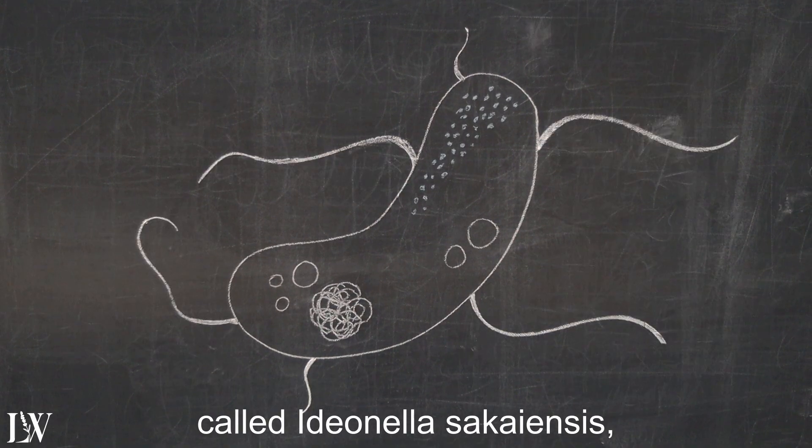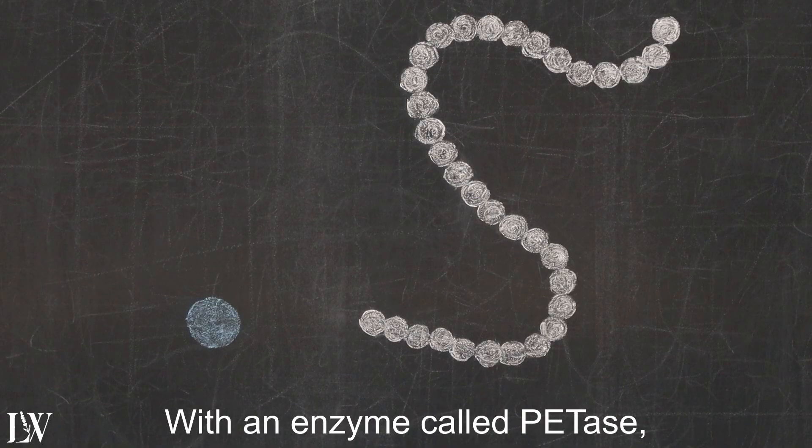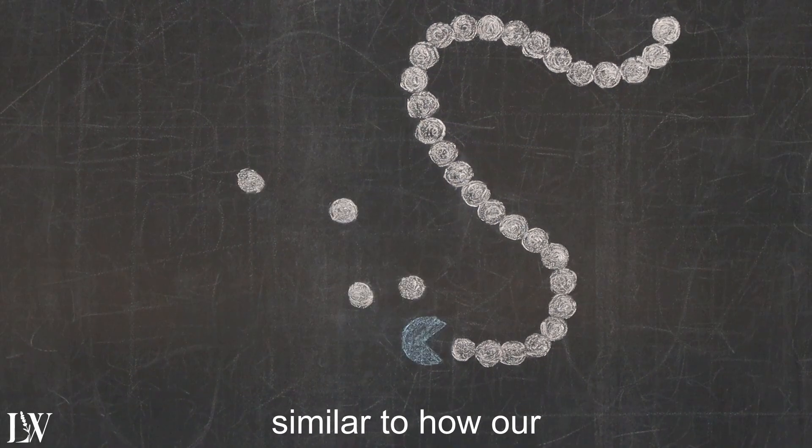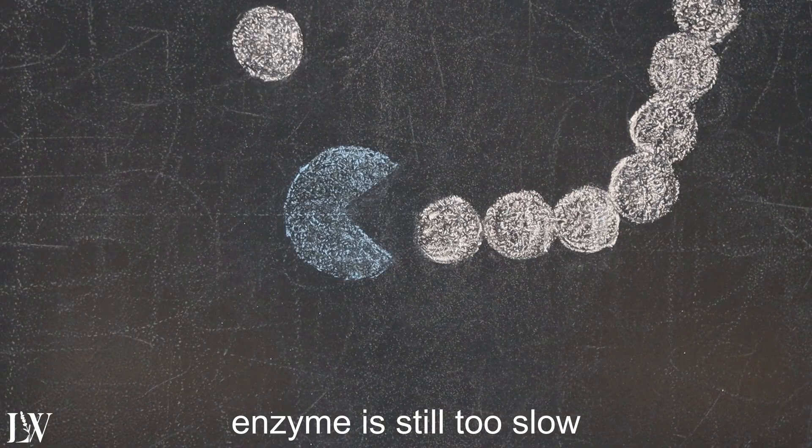This bacterium is actually able to break down PET with an enzyme called petase. It cuts PET into its building blocks, similar to how our body digests food. Sadly, the petase enzyme is still too slow and unstable for industrial use.